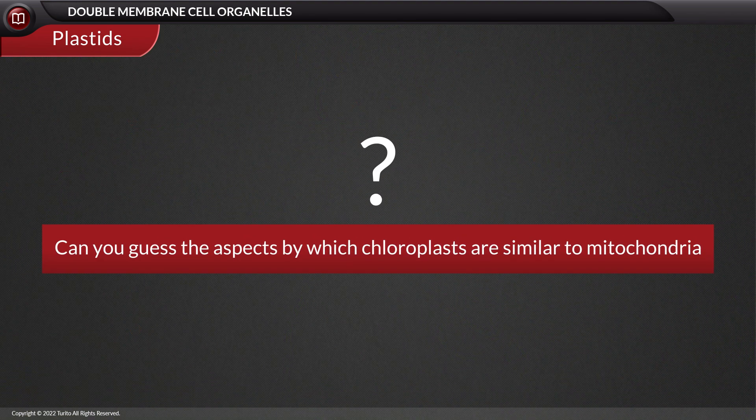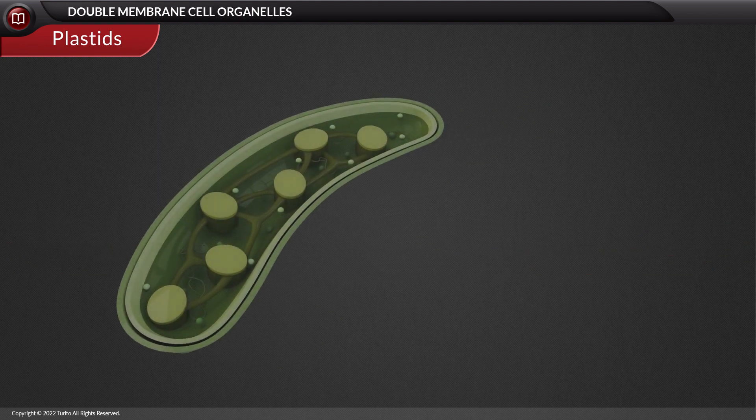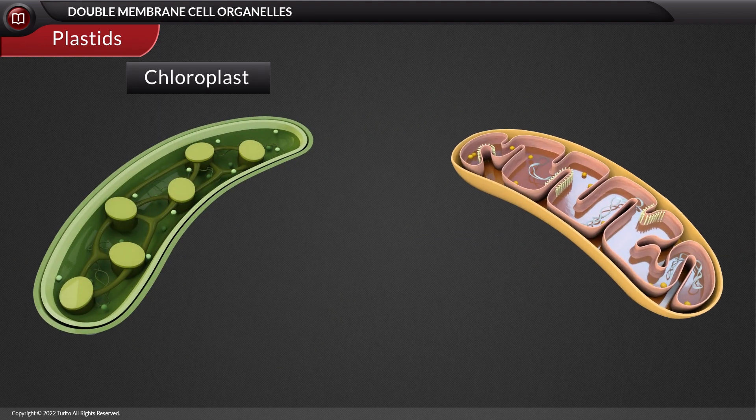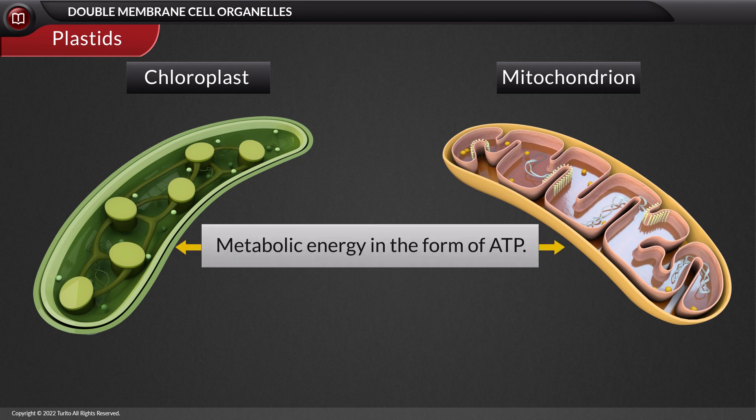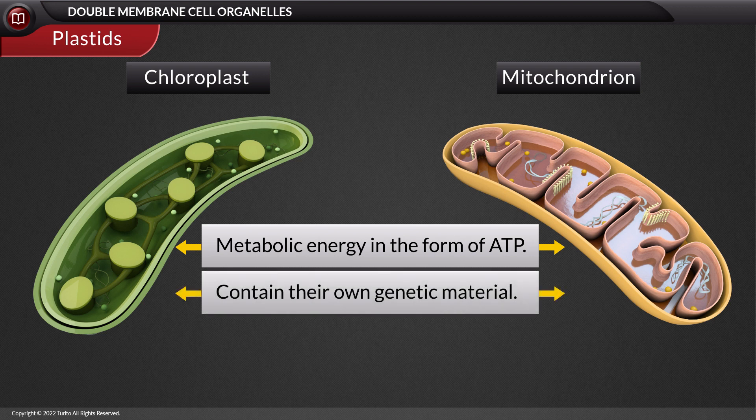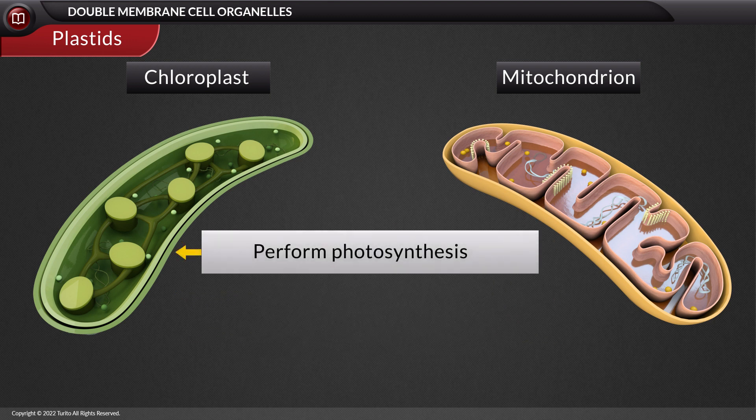Can you guess the aspects by which chloroplasts are similar to mitochondria? In many aspects, chloroplasts are similar to mitochondria. Both organelles generate metabolic energy in the form of ATP, contain their own genetic material, and divide by fission. However, the chloroplasts perform a unique task called photosynthesis.